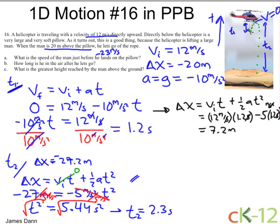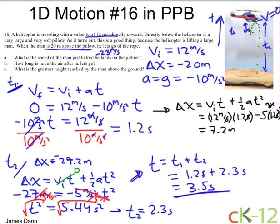Therefore, the total time t1 plus t2 is simply 1.2 seconds plus 2.3 seconds, which equals 3.5 seconds. So he's in the air for 3.5 seconds before he lands on the pillow. And to answer part C — his highest point was 7.2 meters above where he let go. 7.2 plus 20 equals 27.2 meters. That's the answer to part C, and part B is 3.5 seconds.